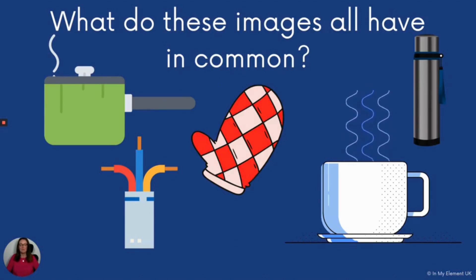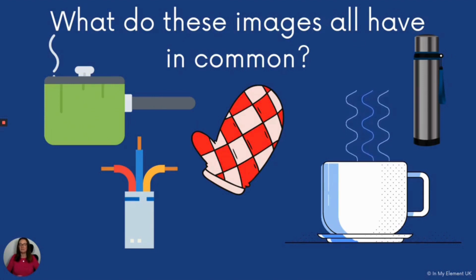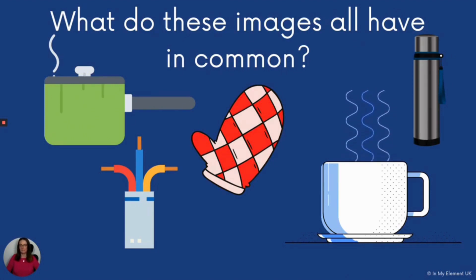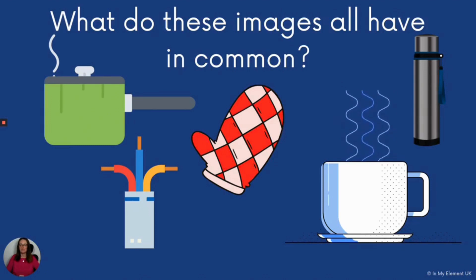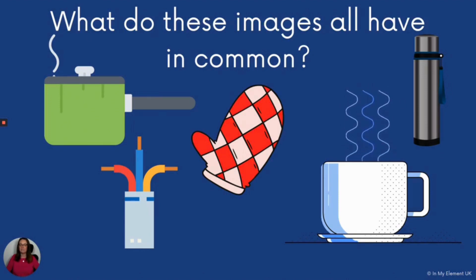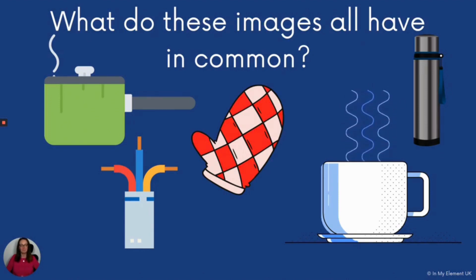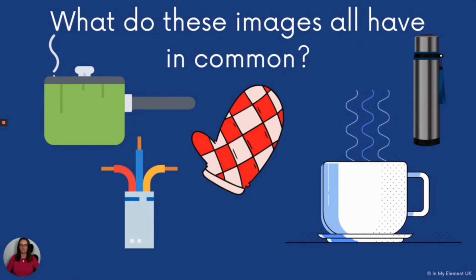We've talked about heating, but we also need to think about protecting ourselves and retaining heat or avoiding burns. All of these objects have something in common linked to this. You've got a saucepan with a different material used to make the lid and handle, a plug with insulation around the wires, an oven glove, a coffee cup, and a flask. Have a little think about what they might all have in common.